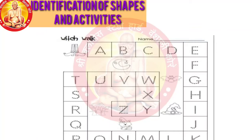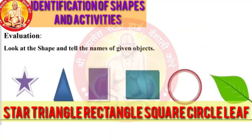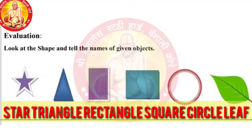Now the next activity — Evaluation. Look at the shape and tell the names of the given objects. Khali dilelie avasthancha akar kongte ae te sanga. First one: Star. Second one: Triangle. Third one: Rectangle. Fourth one: Square. Fifth one: Circle. Sixth one: Leaf shape.